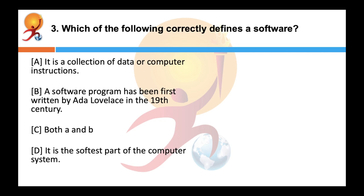Which of the following correctly defines a software? Correct answer is both A and B. A computer software is all the information processed by computer systems, programs and data. Computer software includes computer programs, their libraries and related non-executable data. A software program is said to be first written by Ada Lovelace in the 19th century who had helped Charles Babbage.